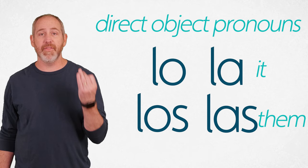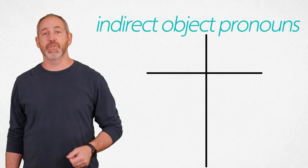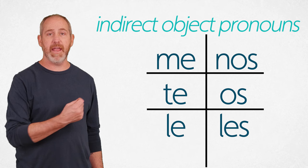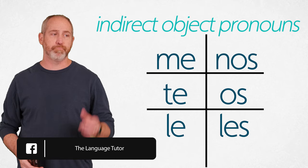Now remember, a long time ago we learned indirect object pronouns: me, te, le, nos, os, las — when we put them on the chart. And those talk about to whom a verb is done. This lesson is going to talk about those together.